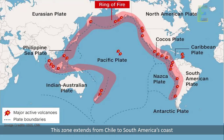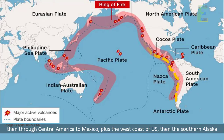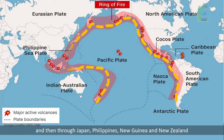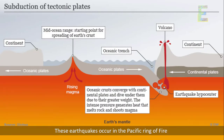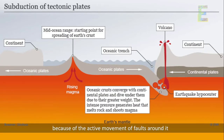This zone extends from Chile to South America's coast, then through Central America to Mexico, plus the west coast of the U.S., then southern Alaska, and then through Japan, Philippines, New Guinea, and New Zealand. These earthquakes occur in the Pacific Ring of Fire because of the active movement of faults around it.